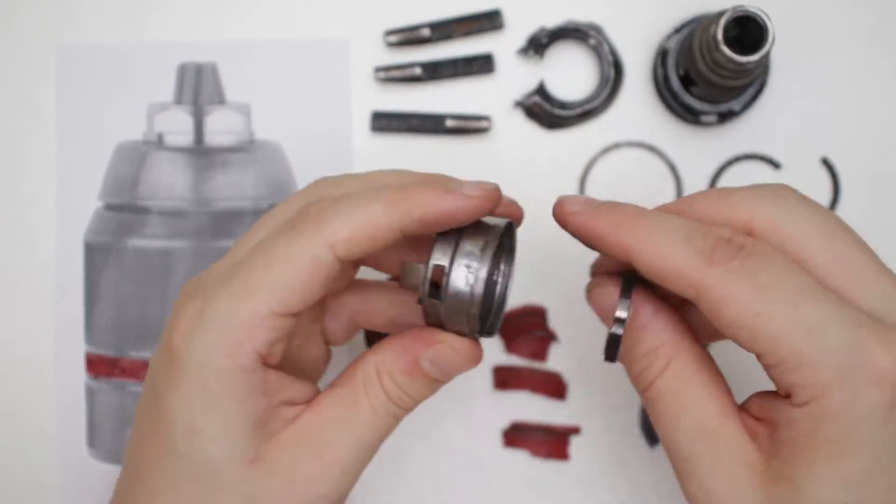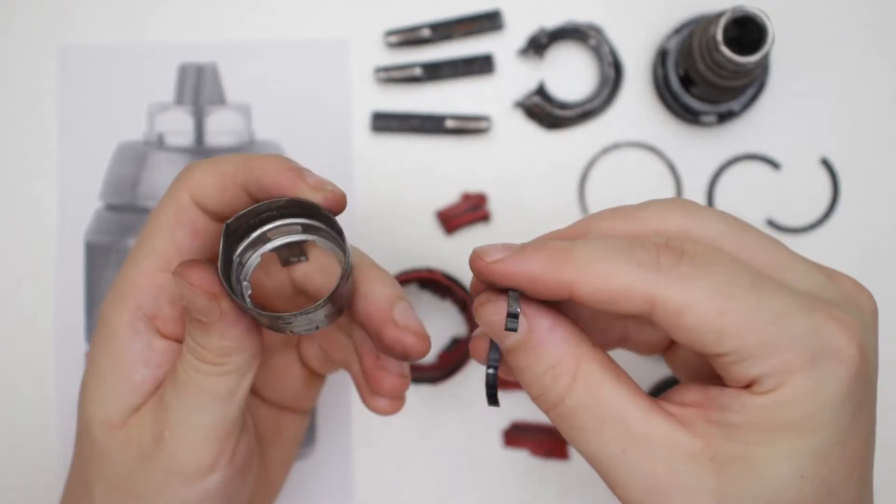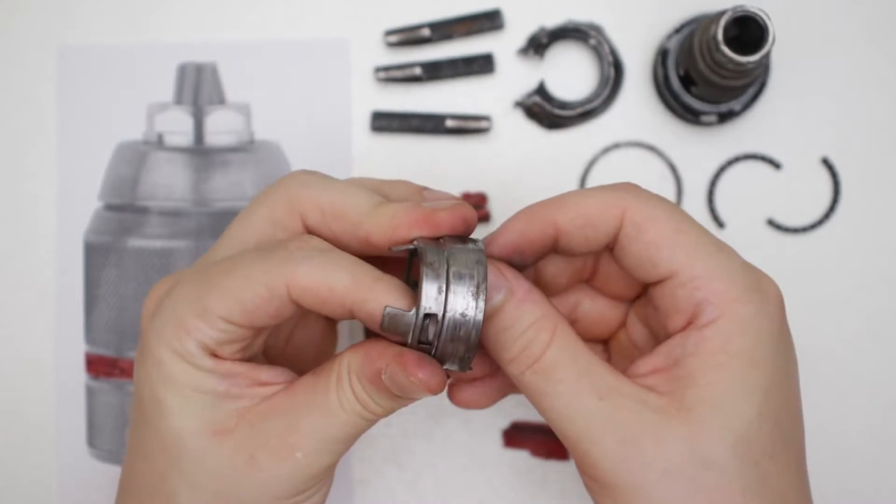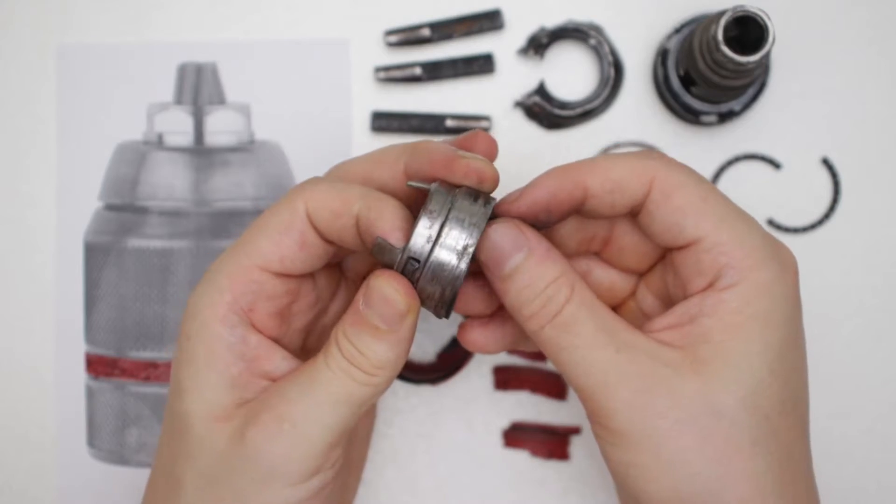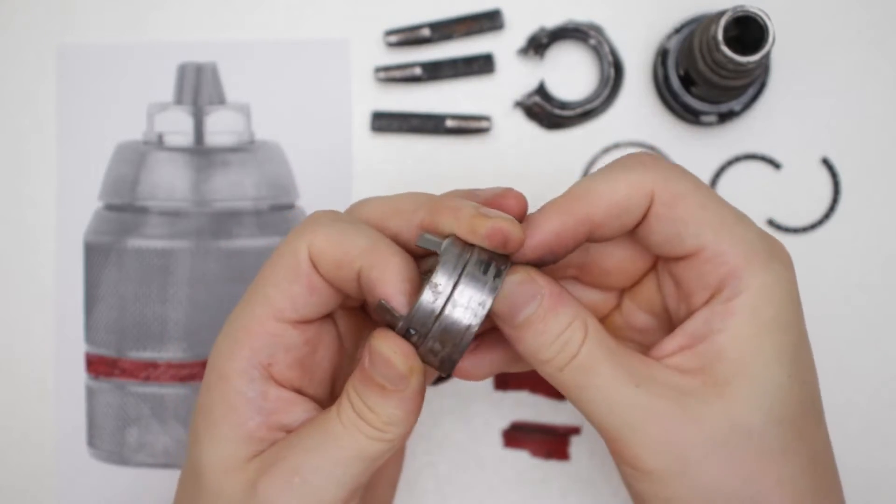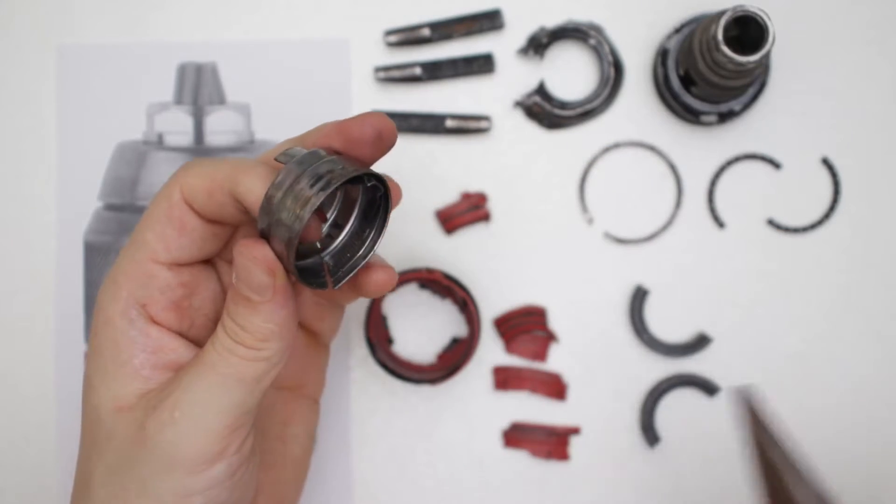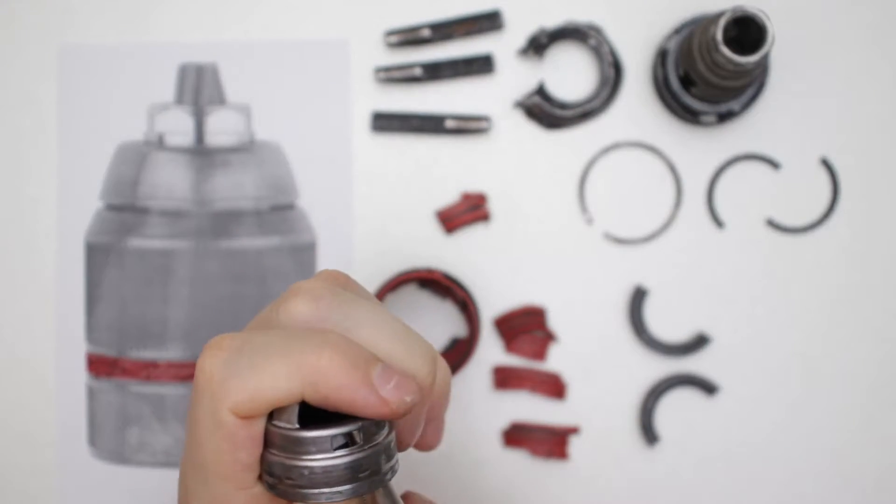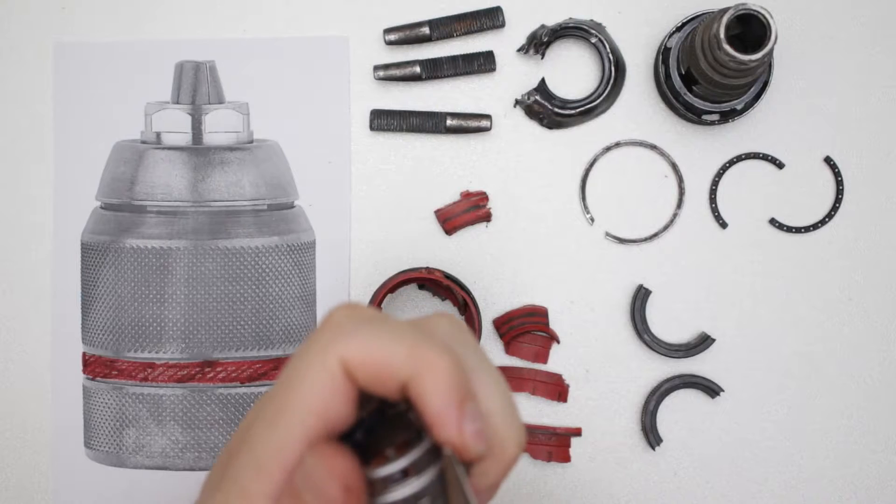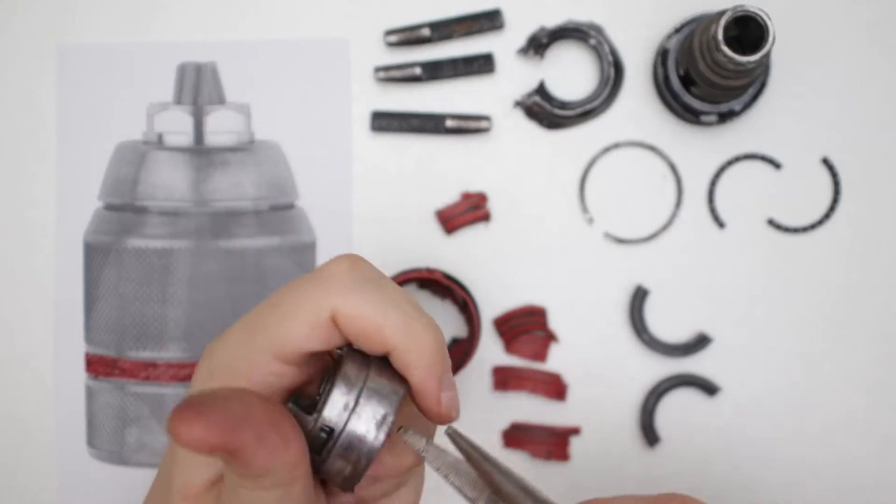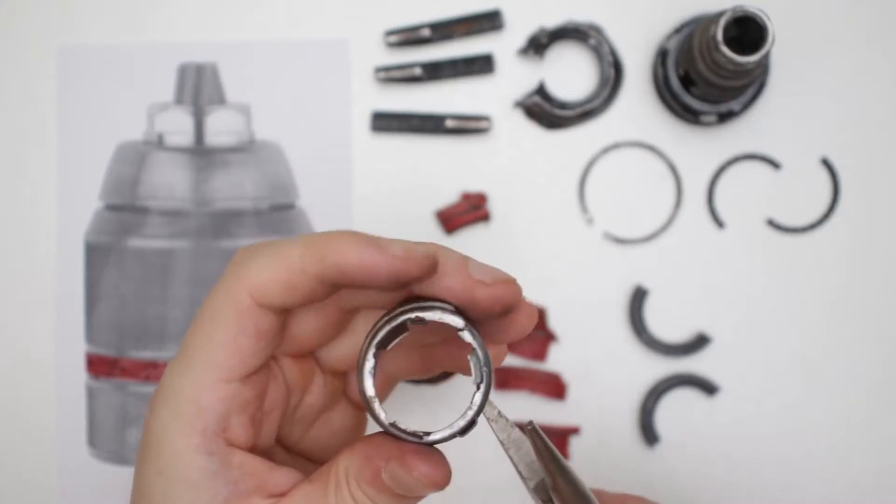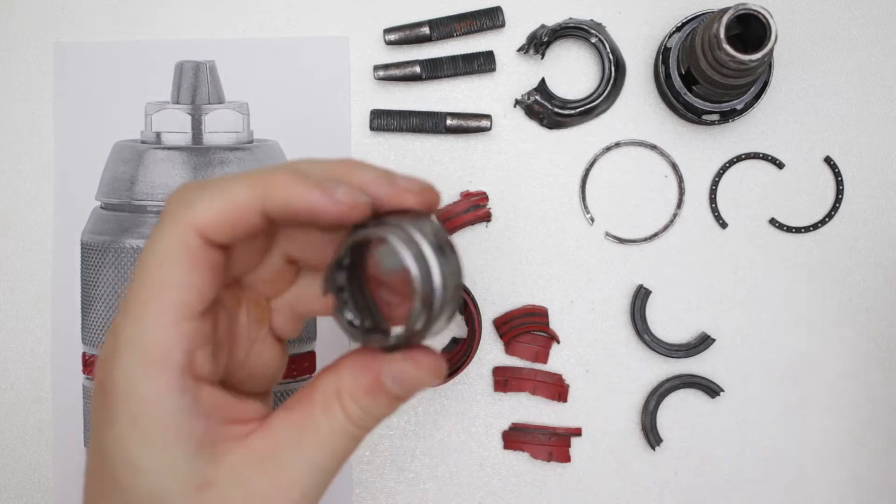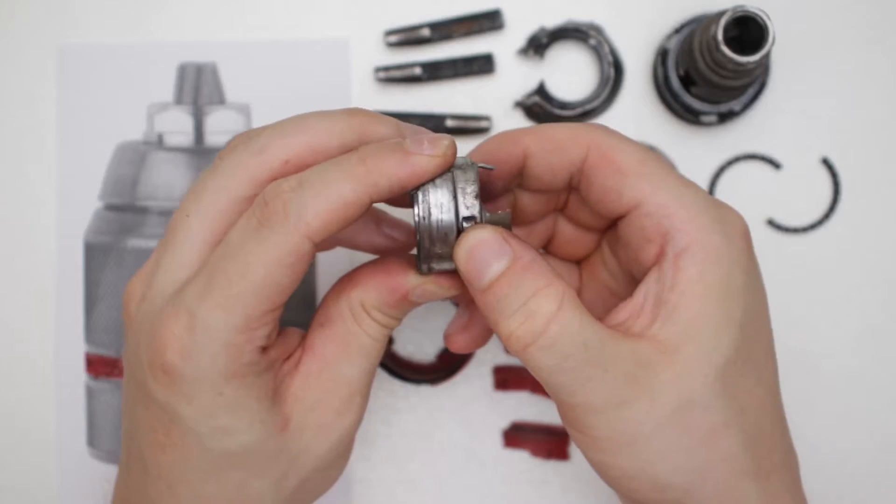So this goes inside here, need to make sure we get the sides correct because the holes are of different sizes. So the spring looks through this hole here and through the hole on the other side, and get some pliers to cram this in place. So the spring is peeking out through the two holes here.